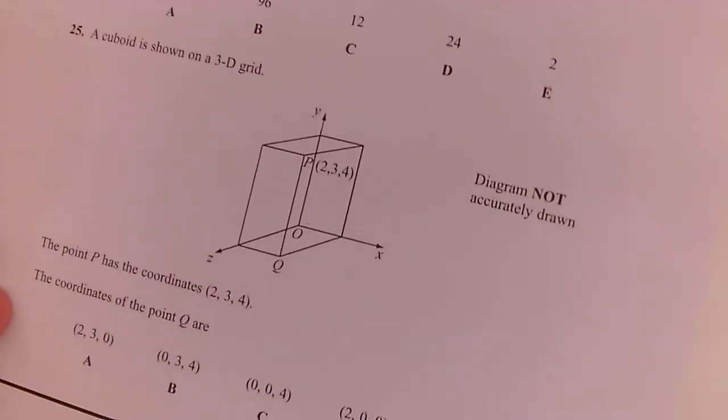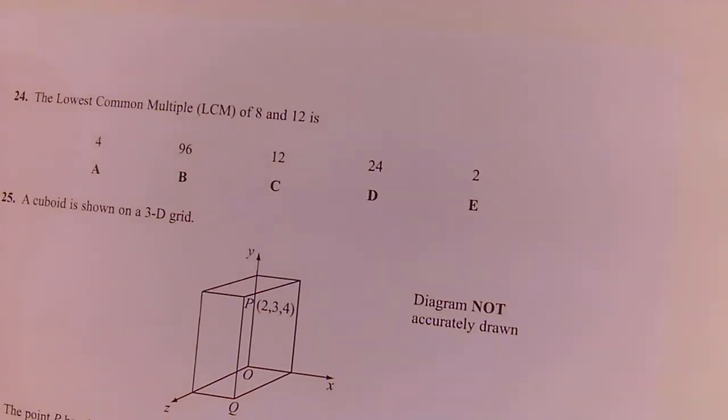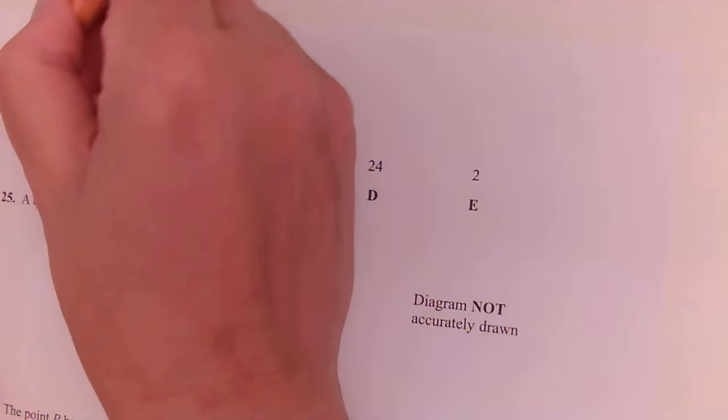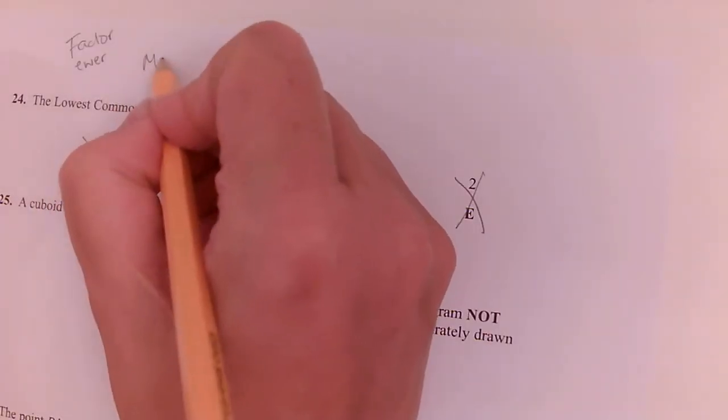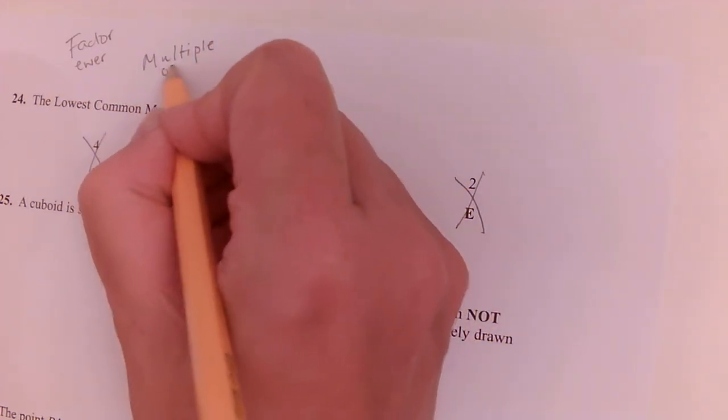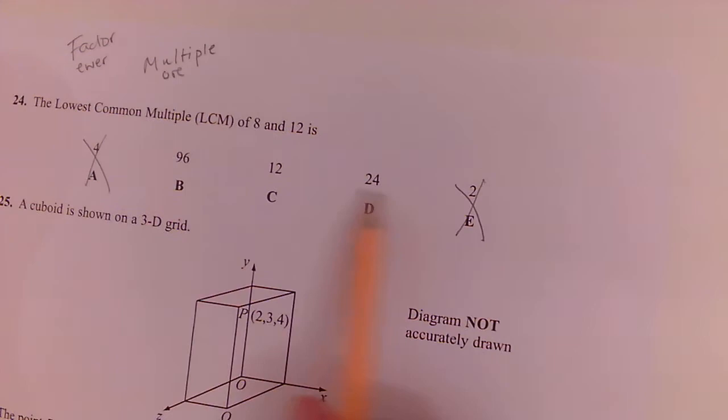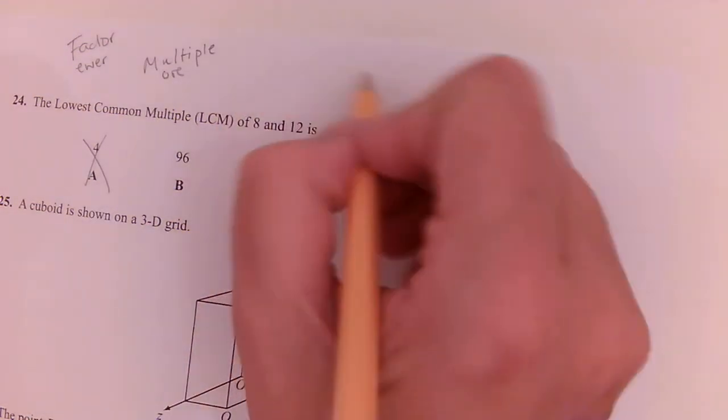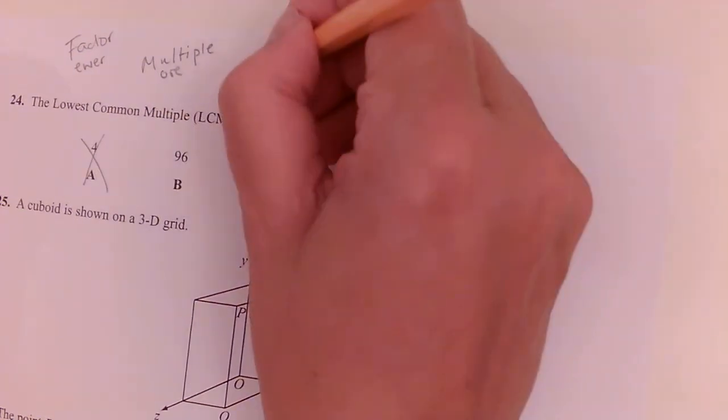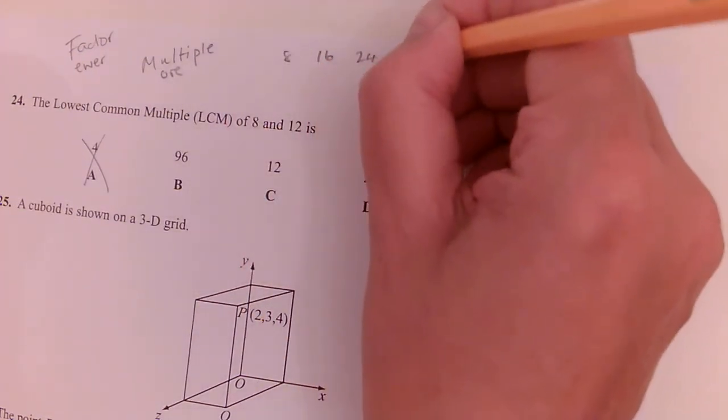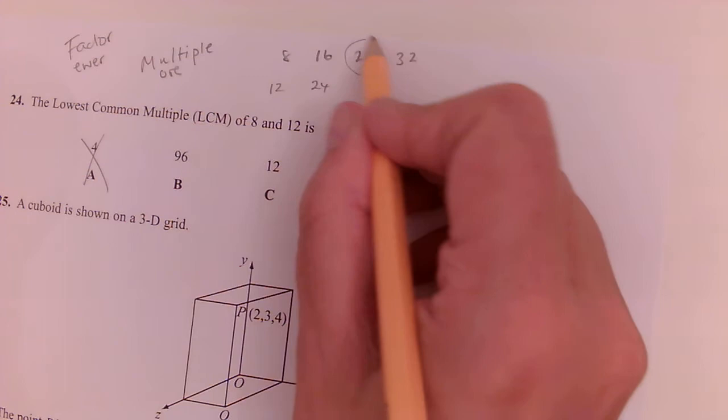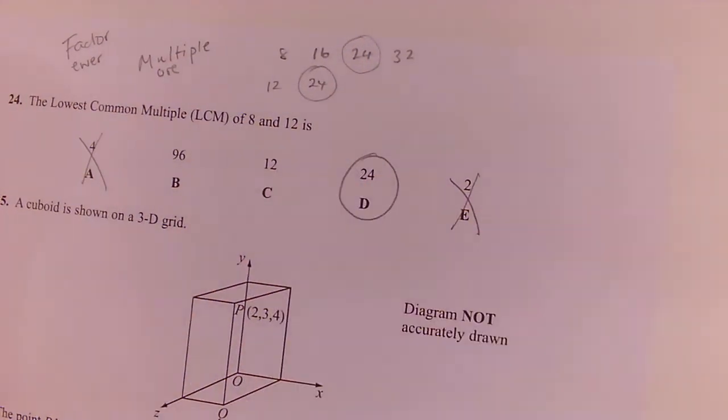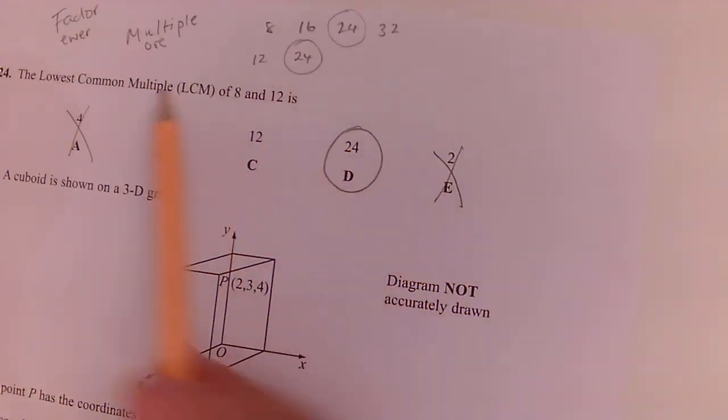Question 24. What is the lowest common multiple of 8 and 12? So remember, factor is fewer, so it's a smaller number, so we know it's not smaller, so it's not the number 4 and it's not the number 2. Multiple is more. So we can just list out the multiples of 8: 8, 16, 24, 32, and the multiples of 12: 12 and 24. The lowest one that comes in common is the number 24. So the most common mistake there is to mix up the factors and the multiples and get them jumbled up.